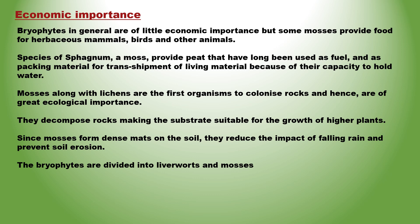इनकी Economic Importance बहुत कम होती है। कुछ Mosses, शाकाहारी mammals, birds तथा दूसरे animals को भोजन प्रदान करती हैं। Sphagnum की कुछ species peat प्रदान करती हैं, जिसका उपयोग fuel के रूप में होता है। इसमें water holding capacity होती है, इसलिए यह living material की packing में तथा transshipment में use होते हैं। Mosses तथा lichens पहले organisms हैं जो rocks पर grow करते हैं, इसलिए यह ecologically बहुत महत्वपूर्ण होते हैं। यह rocks को decompose कर substrate को higher plants की growth के लिए suitable बनाते हैं। Mosses मिट्टी पर dense mats बनाते हैं, इसलिए rainfall अधिक नुकसान नहीं पहुँचा पाती और इस प्रकार यह soil erosion को रोकते हैं।